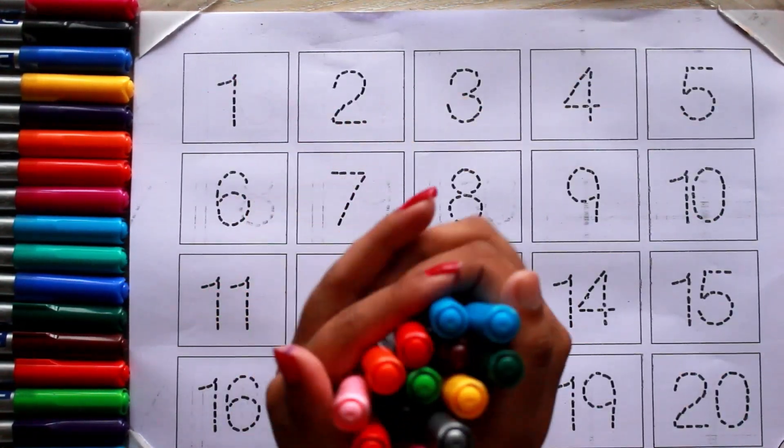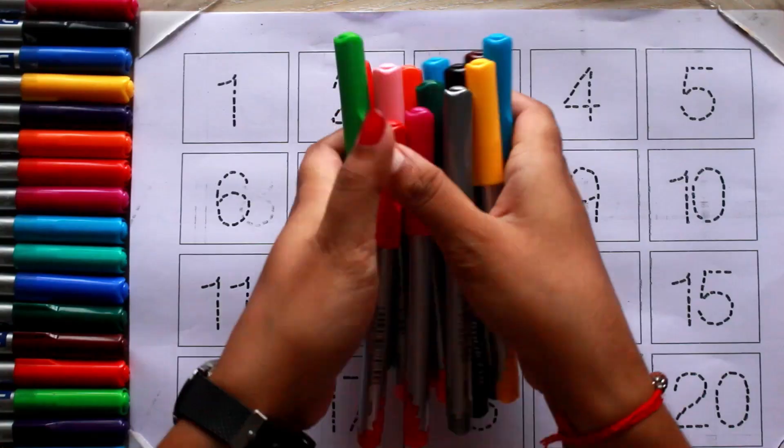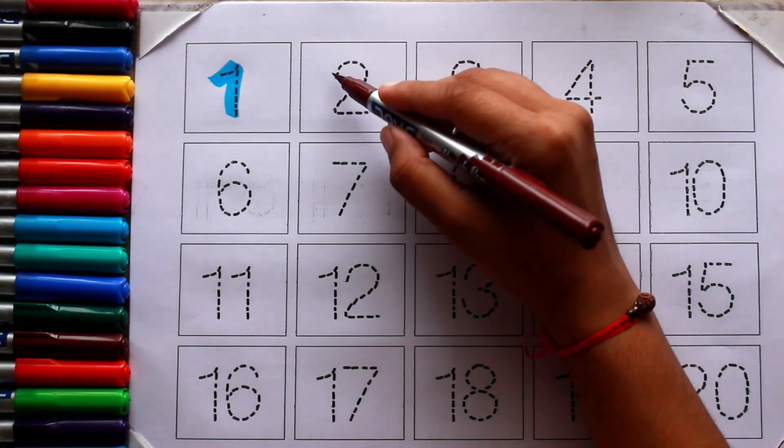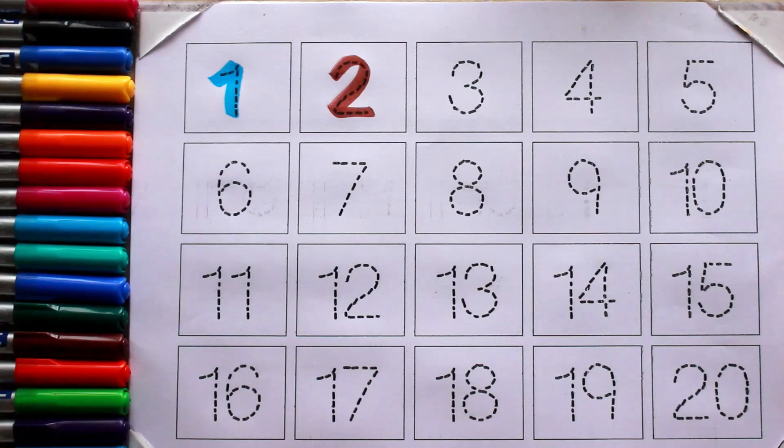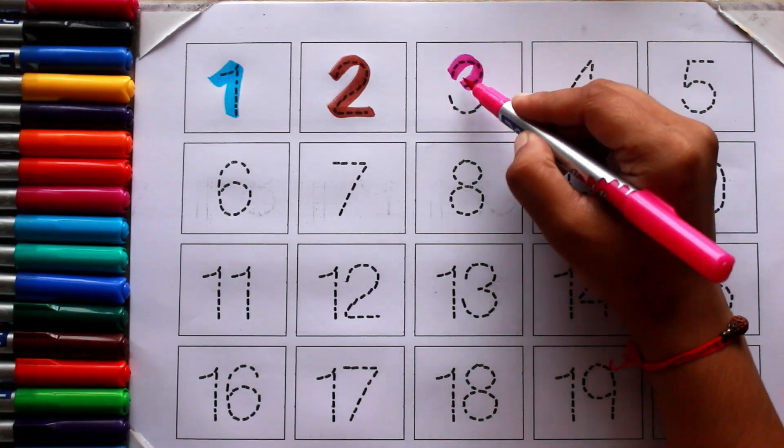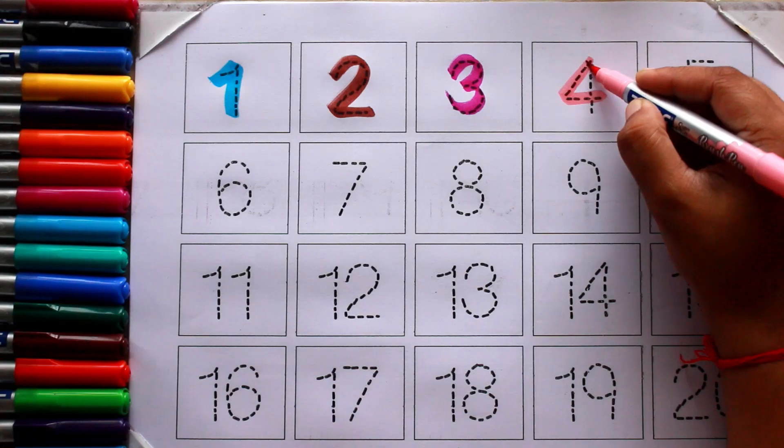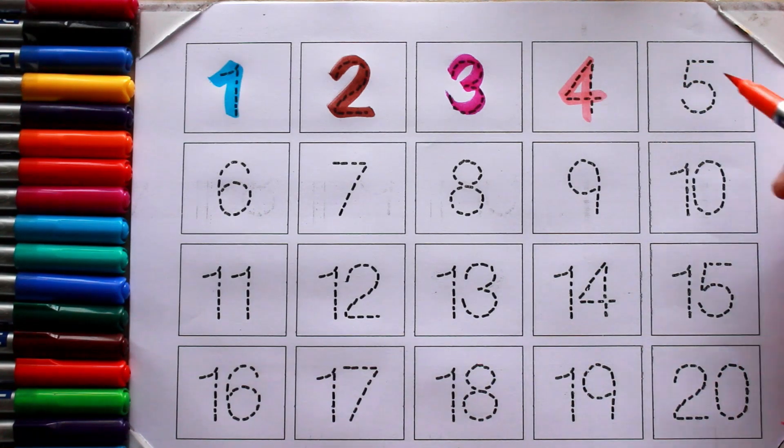Let's start with colors. Sky blue color one, brown color two, pink color three, baby pink color four, orange color five.